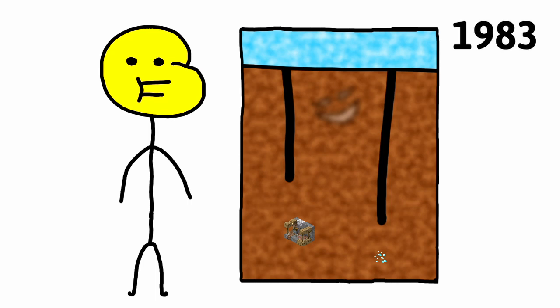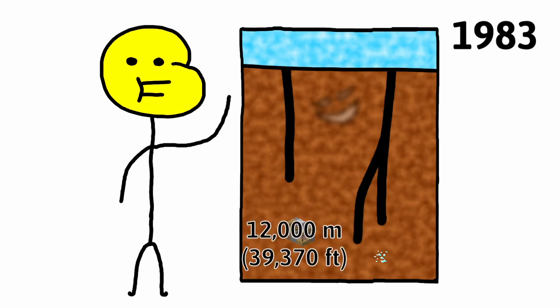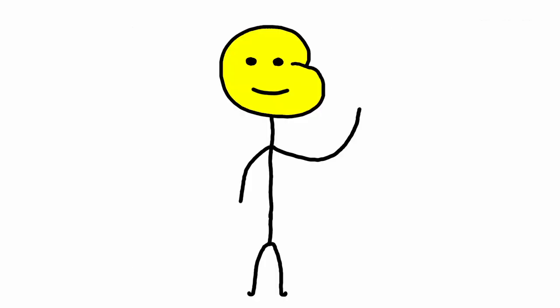they decided to make a new hole. In the existing first hole, at 9,300 meters, they started the second hole. The second hole reached 12,000 meters that same year, when they stopped drilling to do some research, celebrate, flex on the US, whatever.